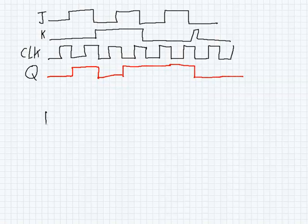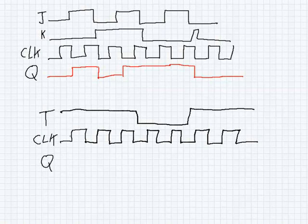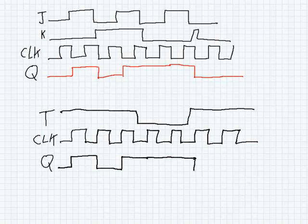Now for a T flip-flop example. The T flip-flop has the T control signal, a clock signal, and a Q output. Let's say this is rising edge triggered with Q starting at 0 and T enabled for an initial period, then turned off, then back on. At each rising edge where T is 1, we toggle. At rising edges where T is 0, we stay at the same value. So toggling continues only while T is high.